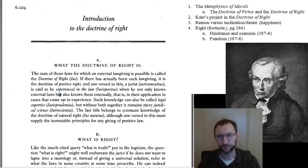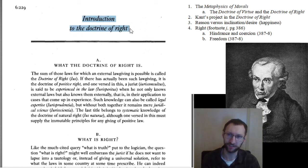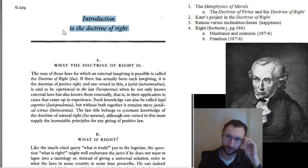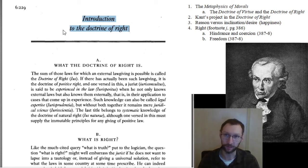This is the lecture for the introduction to the Doctrine of Right, which is our first reading from the Doctrine of Right. We're going to start by talking about the structure of this reading. We're reading the Doctrine of Right, which is half of a book called The Metaphysics of Morals. The Metaphysics of Morals has the Doctrine of Virtue, which is the second half, and the Doctrine of Right, which is what we're reading, the first half.